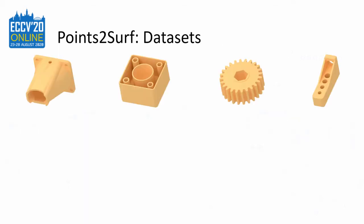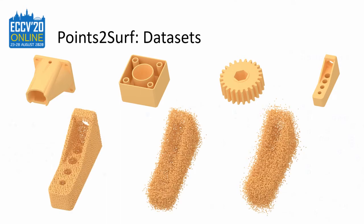Here you can see some examples from the ABC dataset. The ABC dataset consists of one million CAD objects, from which we take around 5000 for our training set and 100 for our test set. We use the time-of-flight scanner from Blenso to sample the point clouds with realistic artifacts like scan shadows and noise. We vary the noise strength randomly between zero noise, like on the left, and strong noise, like on the right.